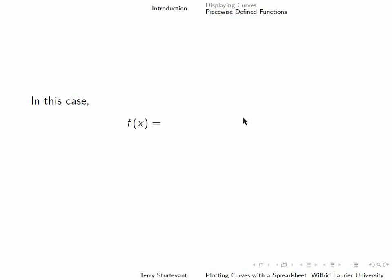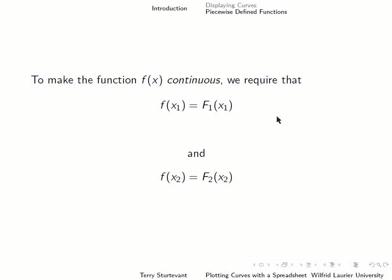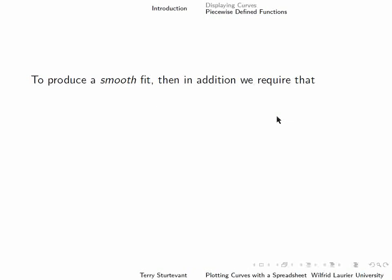So the equation for that curve is the y value at the left end has to be the same as the y value of the first function. The y value of the second end has to be the y value of the second function. And then, to make it smooth, we also need that the derivatives of those two things are the same.